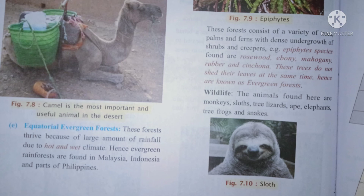The animals found in the equatorial evergreen forest include monkeys, tree lizards, elephants, tree fox, snakes, and apes. These are the most important wildlife found here, though some smaller animals are found too. It is characterized by a hot and wet climate, and is found in Malaysia, Indonesia, and parts of the Philippines.